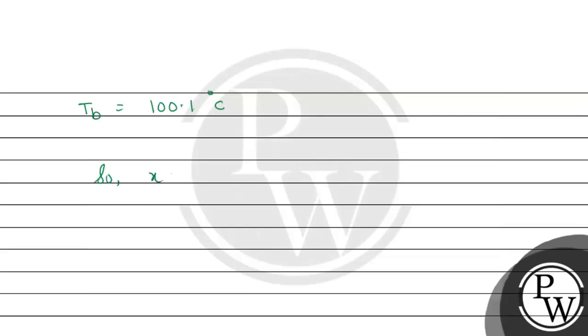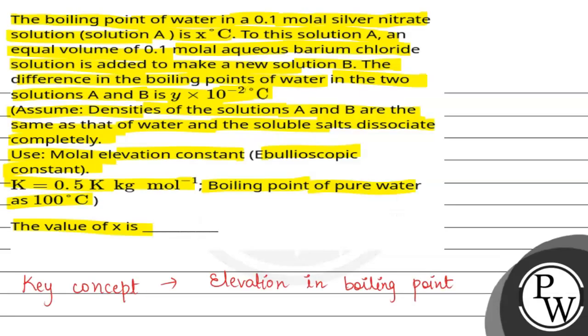So x will be equal to 100.1 degree Celsius. Here we will have the value of x is 100.1 degree Celsius. Hope you understood the question. Best of luck.